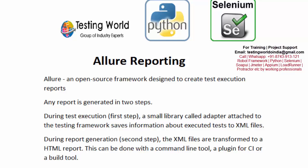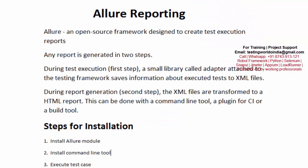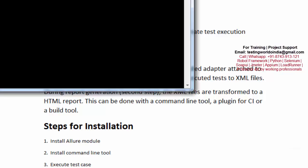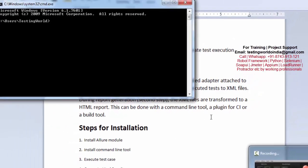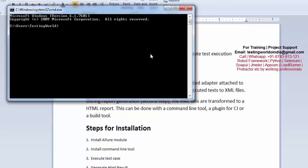Now, moving to the setup — if we are going for Allure reporting we need to do the setup. First of all, whenever we want to work with Python we need to install its module. So first we need to install the Allure module. I am writing: pip install pytest-allure-adapter.